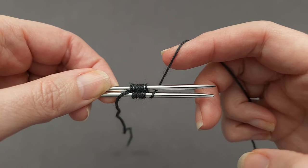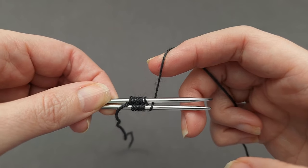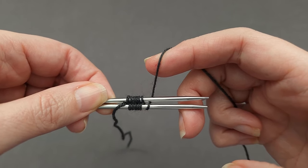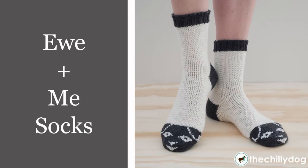I hope you enjoyed learning how to do a figure-8 cast on. If you did, make sure to give this video a thumbs up and share it with your knitting friends. If you'd like to try this technique in a pattern, head over to the shop section of thechilidog.com and look for our You and Me Socks. Until we stitch again, happy knitting!